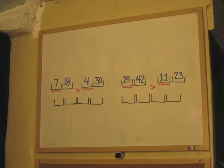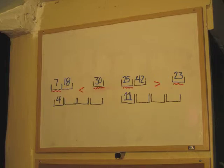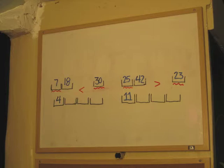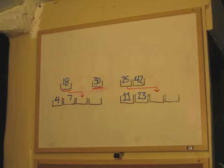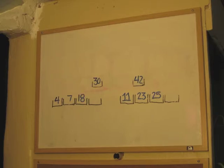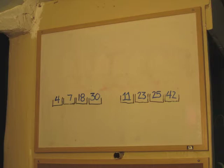Again, we compare the first number of each list with the first number of the list next to it. 7 is greater than 4, so 4 will go into the first spot in that list. 25 is greater than 11, so 11 will go into the first spot in the list below it. Again, we compare the first item in one list to the first item in the list next to it. For example, 7 is less than 30, so 7 will have the next spot in its list. And 25 is greater than 23, so 23 will have the next spot in its list. Now we compare the remaining numbers: 18 is less than 30, so it will go in the first item of its list. And 25 is less than 42, so it will go in the first spot of its list. Now we put the remaining numbers in their spots in the new lists. Now we have two lists of four numbers each.